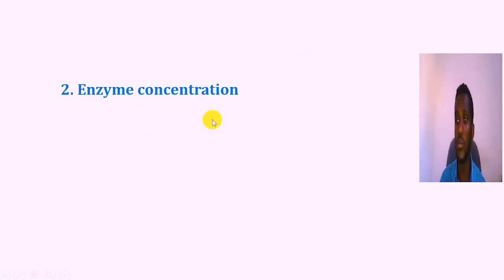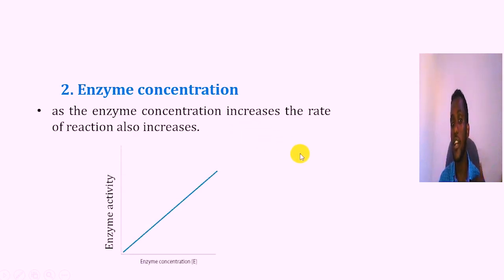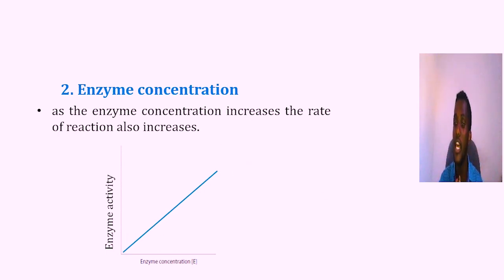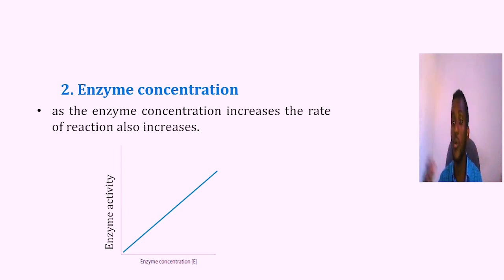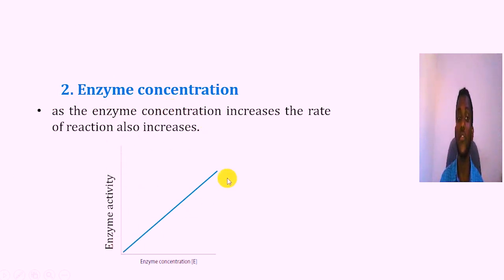If you have a certain factor, you will have an enzyme concentration increase. If the enzyme concentration increases, it will increase the enzyme activity. That is, when the enzyme concentration increases, the rate of a given chemical reaction or the enzyme activity also linearly increases.